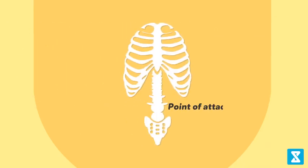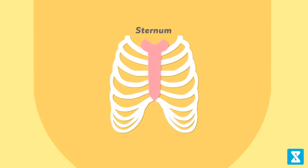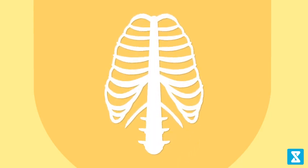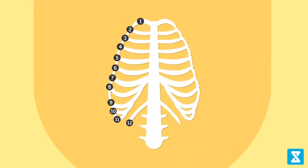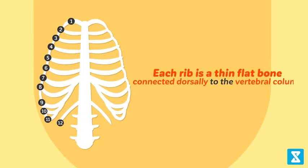The sternum is a flat bone on the ventral midline of the thorax. There are 12 pairs of ribs. Each rib is a thin flat bone connected dorsally to the vertebral column and ventrally to the sternum.